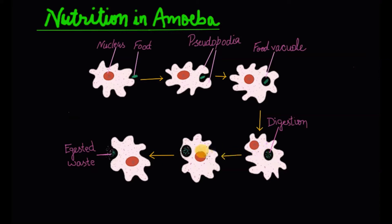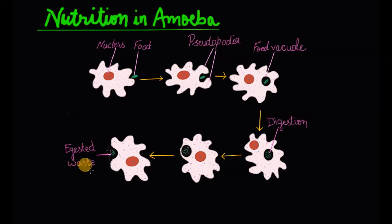Undigested waste is left in this food vacuole. This food vacuole approaches near the cell membrane and fuses with it. This way, the undigested waste is expelled out. So this is how nutrition occurs in amoeba.